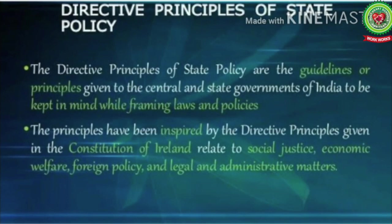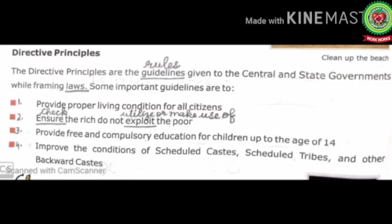The next topic is Directive Principles. Directive Principles means the guidelines given to the government to run a welfare state — some instructions given to the government while framing laws. The directive principles are the guidelines given to the central and state governments while framing laws. 'Guidelines' means rules; 'laws' means rules made by the government.